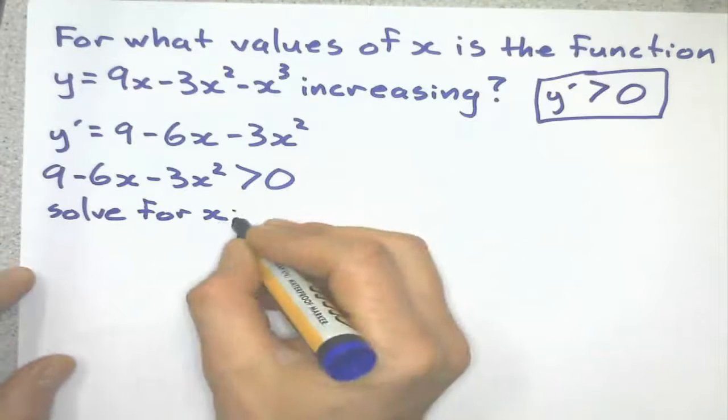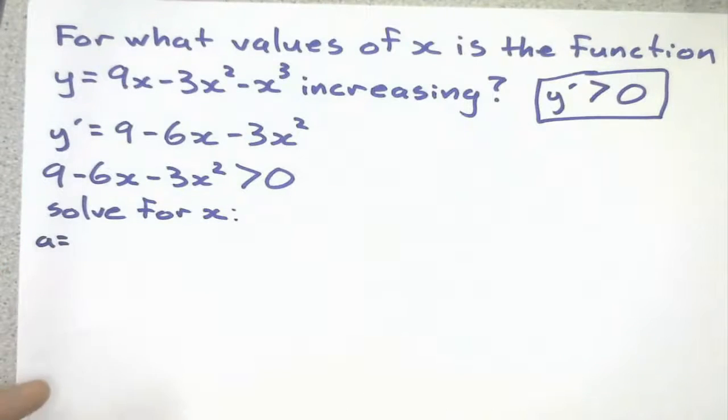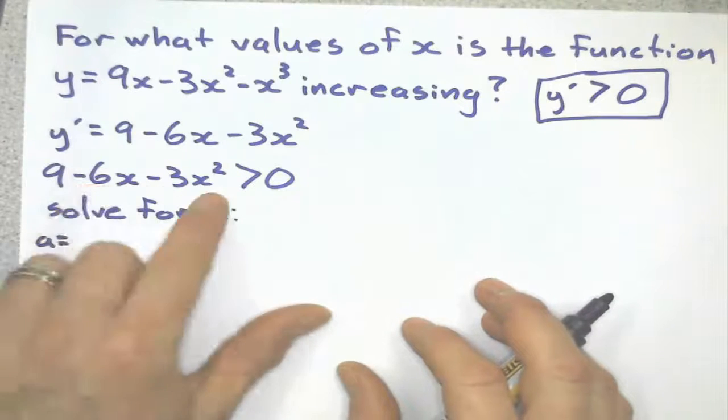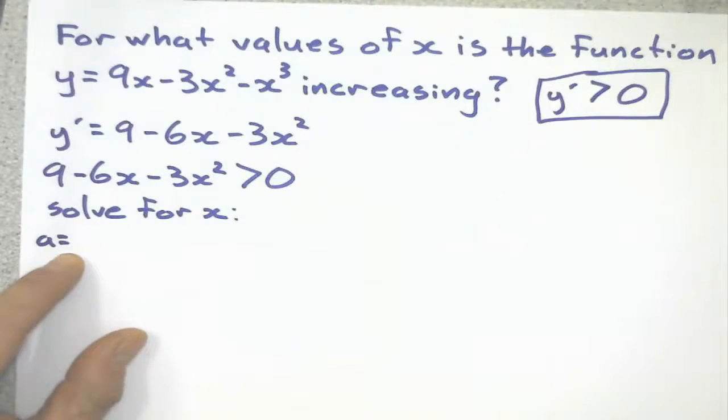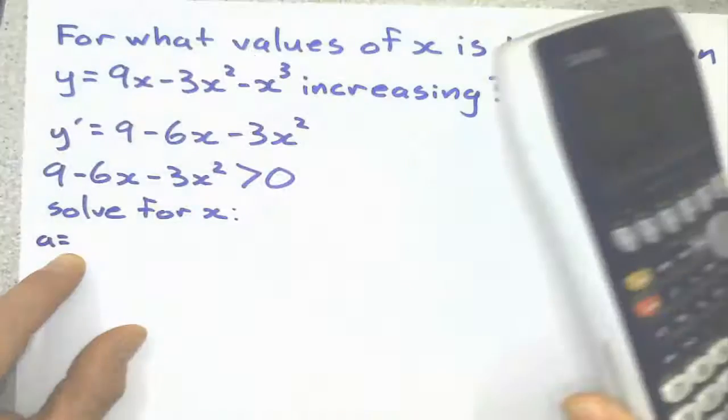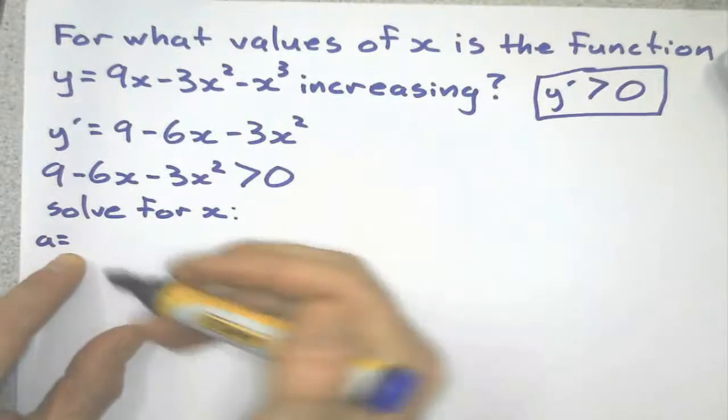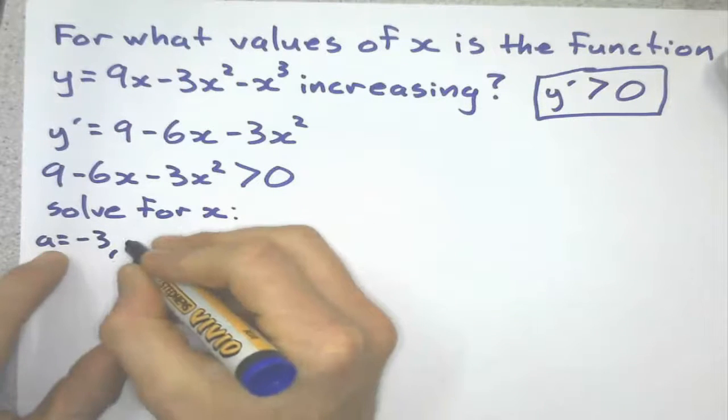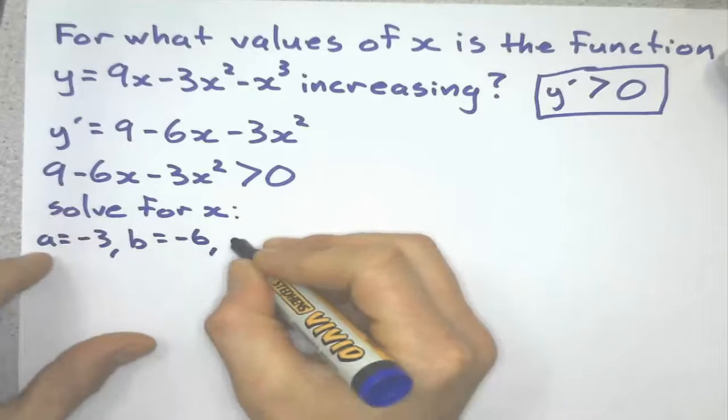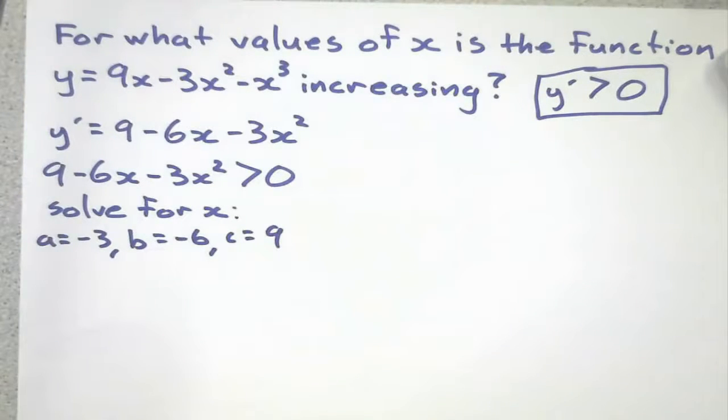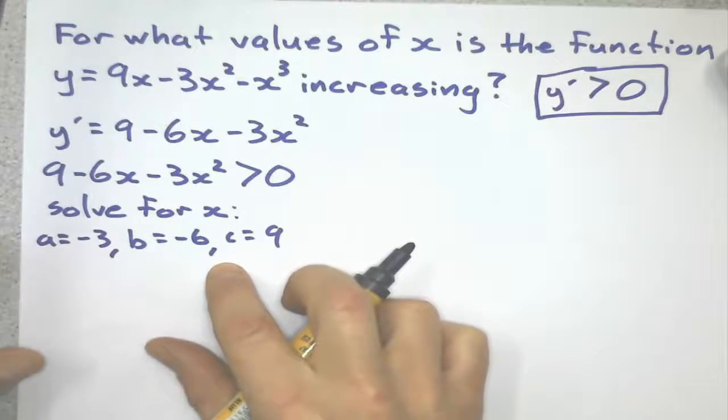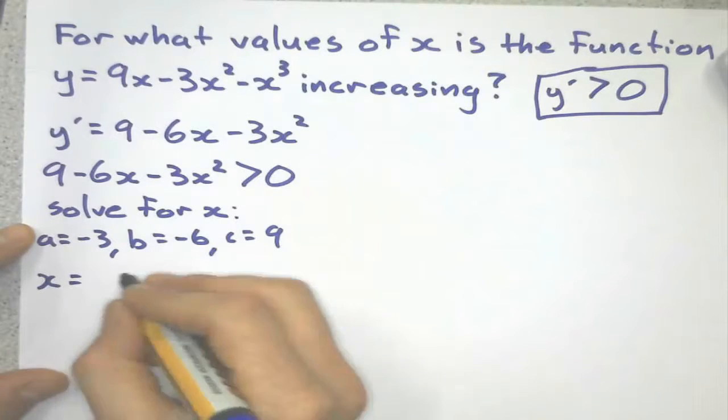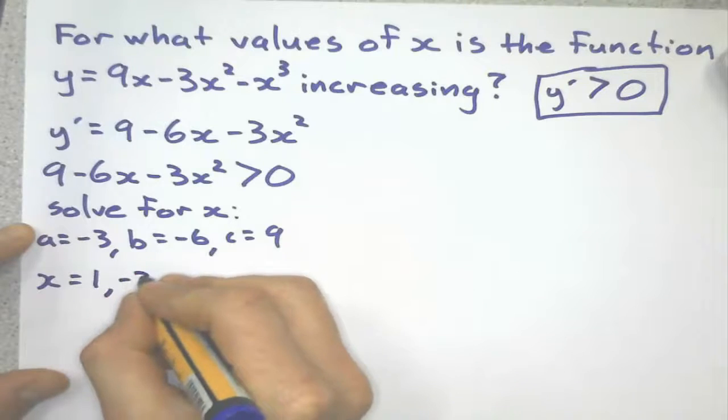If I do solve for x for a quadratic, I look at the coefficients of a, b, and c. Since this one's kind of tricky because it's written backwards, you're either going to use the quadratic formula or the graphics calculator. So a would be negative 3, b would be negative 6, and our constant term c is 9. So I solve for x and I get x is going to equal 1 or negative 3.